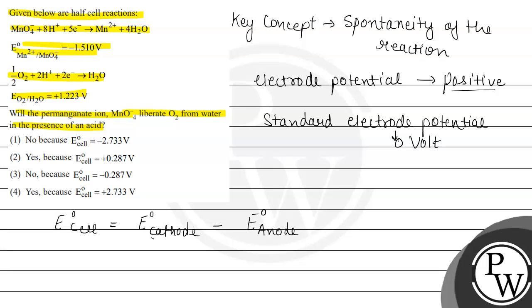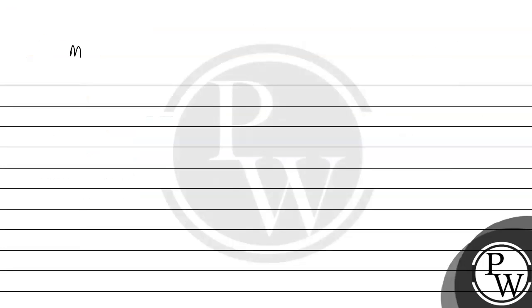And now let us see the reactions given to us. MnO4- plus 8H+ plus 5 electrons leads to the formation of Mn2+ plus 4H2O. And the second reaction we have is half O2 plus 2H+ plus 2 electrons leads to the formation of H2O.